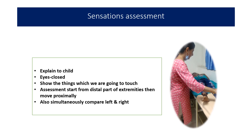Before starting the sensory system examination, explain to the child that we are going to touch body parts with cotton or other things, and instruct the child accordingly. The child should respond indicating which part of the body — right, left, and exactly which part — is touched. The child should keep eyes closed at all times. Before touching any body part, show the child the cotton or pin being used. Assessment should be done from distal to proximal, comparing right and left simultaneously.